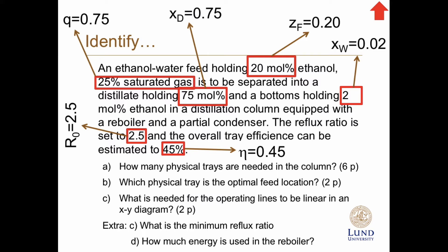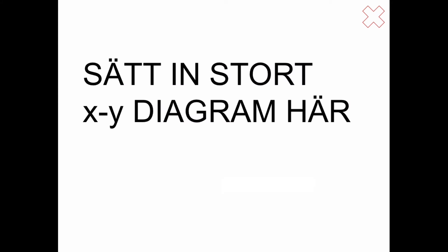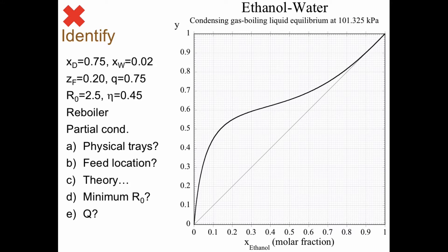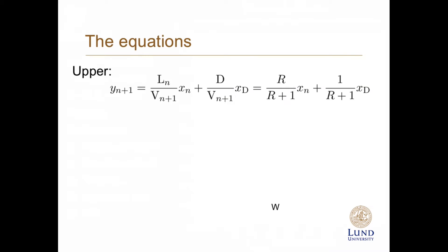The overall tray efficiency is 45 percent, so eta is 0.45. And we have a column equipped with a reboiler and a partial condenser, and we need to calculate the physical trays and the optimal feed location counted in physical trays. These are all our numbers, and these are the equations we need to use.